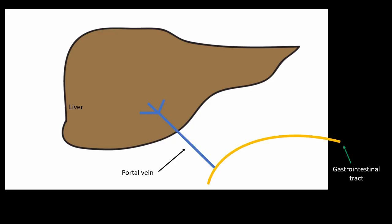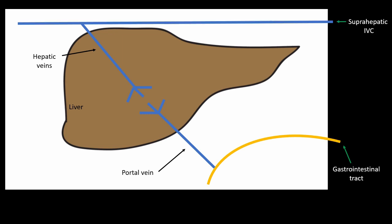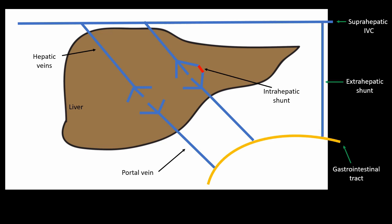Portal vein carries blood from the GI tract to the liver, and hepatic veins drain blood from the liver to the inferior vena cava. Portosystemic shunts could be intrahepatic or extrahepatic. Intrahepatic shunts are abnormal intrahepatic connections between branches of the portal vein and the hepatic veins or IVC. In extrahepatic shunts, the portal mesenteric blood drains into a systemic vein bypassing the liver through a shunt. Extrahepatic shunts could be congenital or acquired.